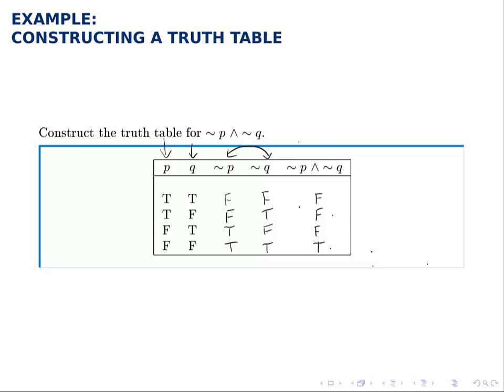So now we have a truth table for this statement. We have that column for the final compound statement. And this process will work even with more complicated compound statements as long as we approach it systematically, building a new column for each new operation we need to include.